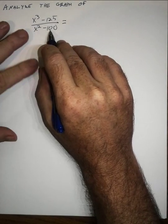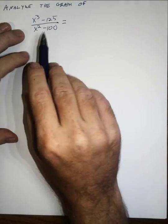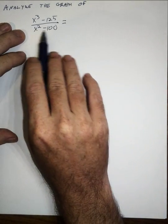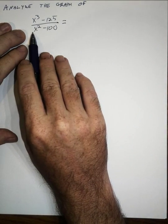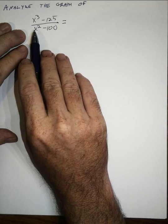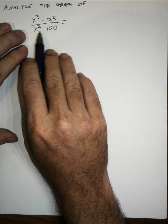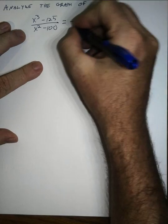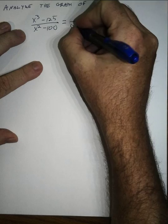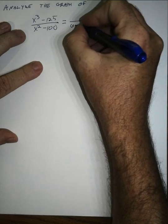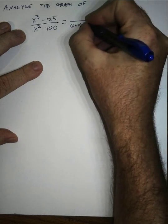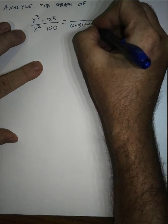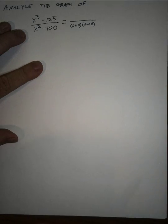We'll start with the denominator — it's the easiest to factor. Notice that it's a difference of squares: a difference of x squared and 10 squared. So we can write that as (x + 10)(x - 10). That's fairly straightforward.